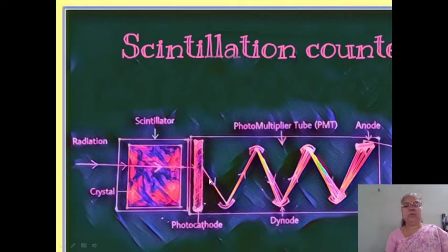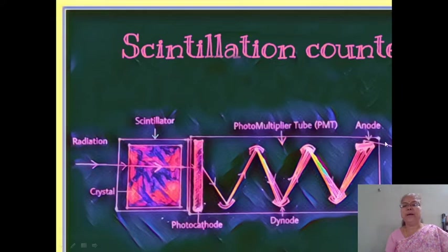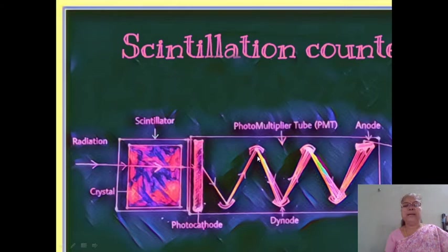This is the photomultiplier tube. When an alpha particle is emitted, it strikes on the photocathode. The photocathode produces secondary electrons. The photomultiplier tube is provided with about 10 to 50 dynodes — first, second, third, fourth, fifth, and so on — and an anode. A large pool of secondary electrons is produced. This is the schematic representation of the scintillation counter with its detecting device.